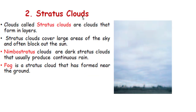The second kind of cloud is called stratus. Stratus clouds are clouds that form in layers and cover large areas of the sky, often blocking the sun.